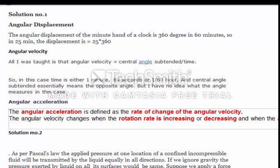Solution 0.1 angular displacement: the angular displacement of the minute hand of a clock is 360 degrees in 60 minutes, so in 25 minutes, the displacement is equals 25 asterisk 360.